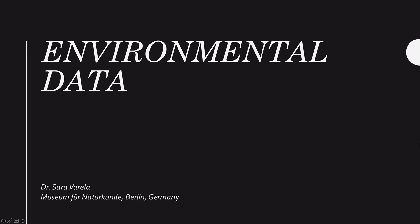My name is Sara Varela and I am working at the Museum für Naturkunde in Berlin, Germany. I work with species distribution modeling and mainly I was using these techniques to try to understand the distribution of species in the past — glacial and interglacial climatic changes and species range shifts. After doing these kinds of things I became very interested in which kinds of layers we have, and I was working with different outputs of different earth system models for my research.